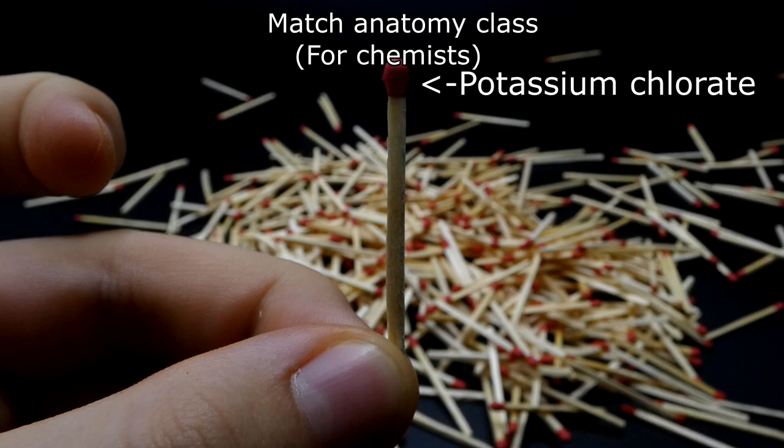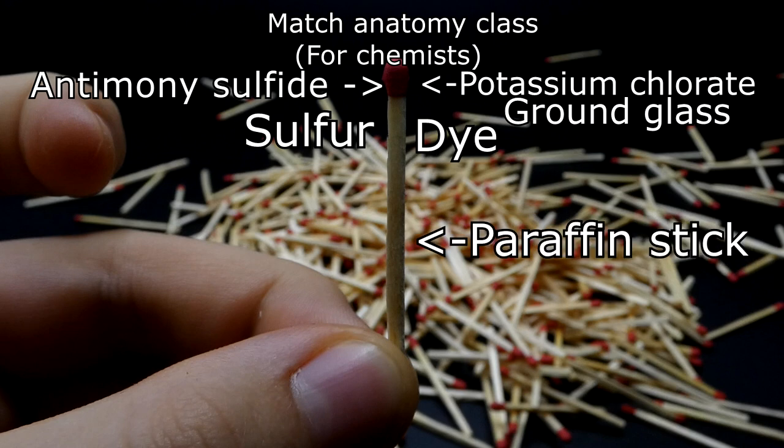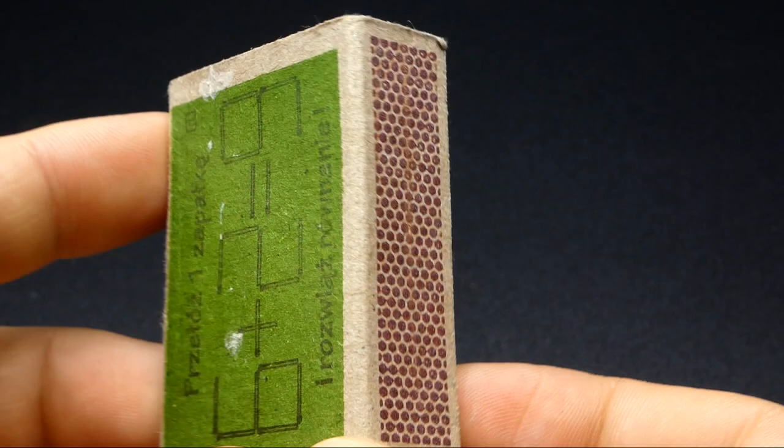Potassium chlorate with antimony sulfate, sulfur, dye and ground glass at the top and the wood part is steel wood but soaked in paraffin. There's also the match box which has some red phosphorus on the sides. With power of these ingredients, we can do a ton of interesting things.